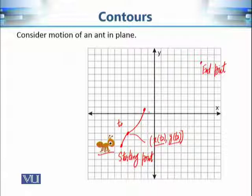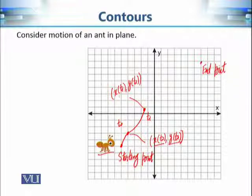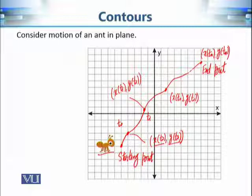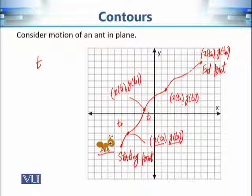Moving on to another time t1, its coordinates are x(t1) and y(t1). Similarly, at t2 the coordinates are x(t2) and y(t2), and so on until we reach the final point x(tn) and y(tn). So by taking time as our parameter and recording the x and y coordinates at each moment, we get values that depend on the parameter t.